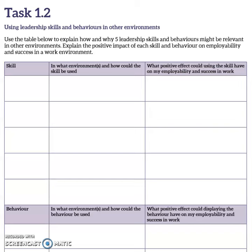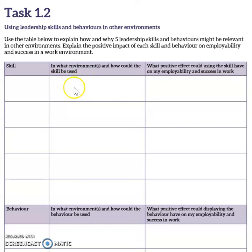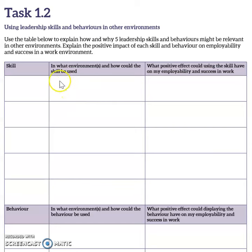For example, if you looked at the first skill of communication, think about what environment and how that skill could be used — it could be in sports, in class, in the session that you're planning, or in events planning when you'll be running a tournament. Include anything relevant there.